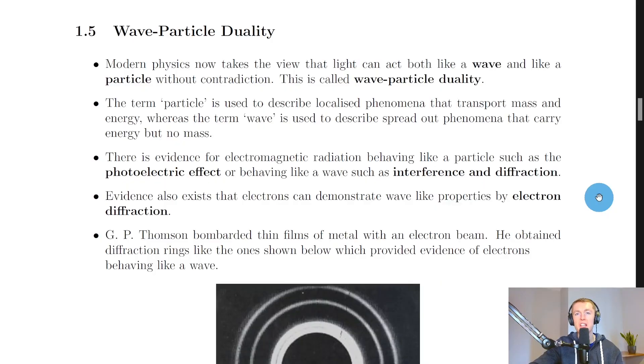Now wave-particle duality was also seen in the higher physics course, but we're going to expand on it a little bit in the advanced higher physics course. It says here that modern physics now takes the view that light can act both like a wave and like a particle without contradiction. This is called wave-particle duality.